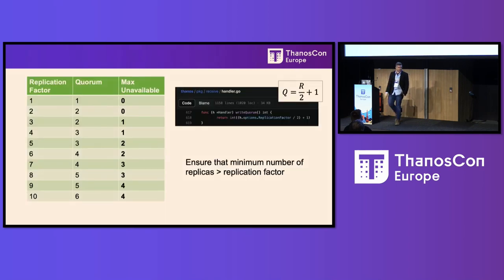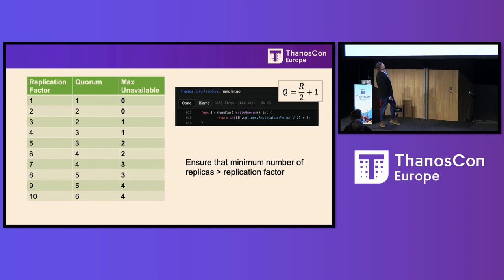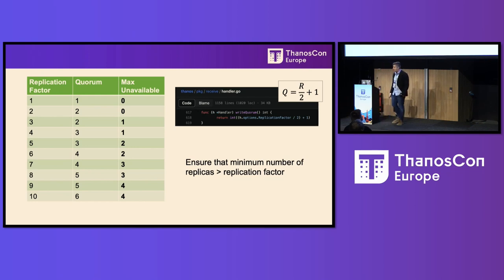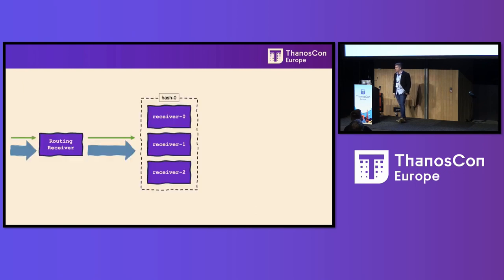This is how the quorum is calculated in Thanos — it's maybe a bit controversial. Currently, replication factor two gives us a quorum of two. There's a little hint there as to what went wrong.